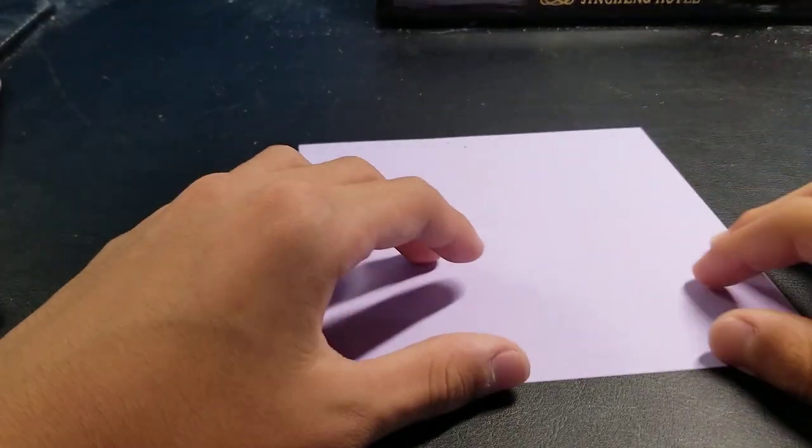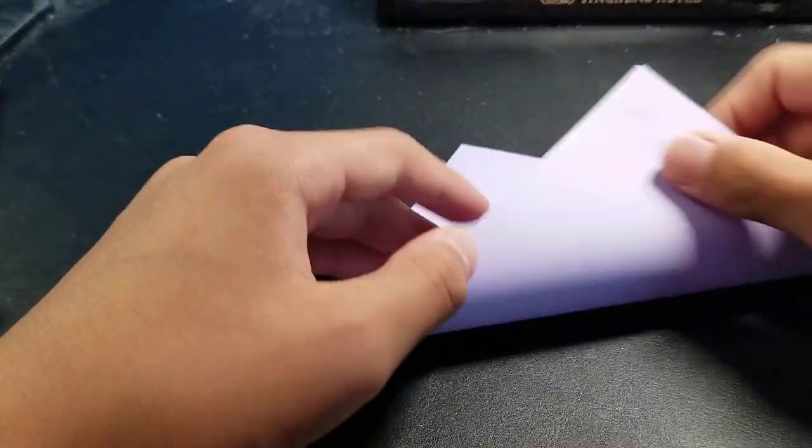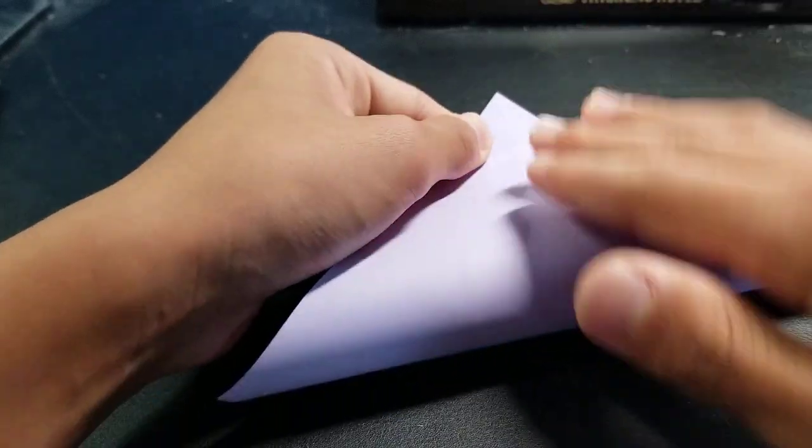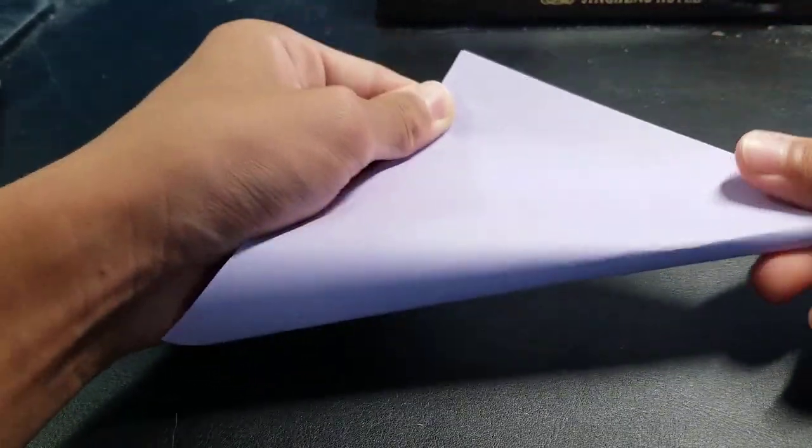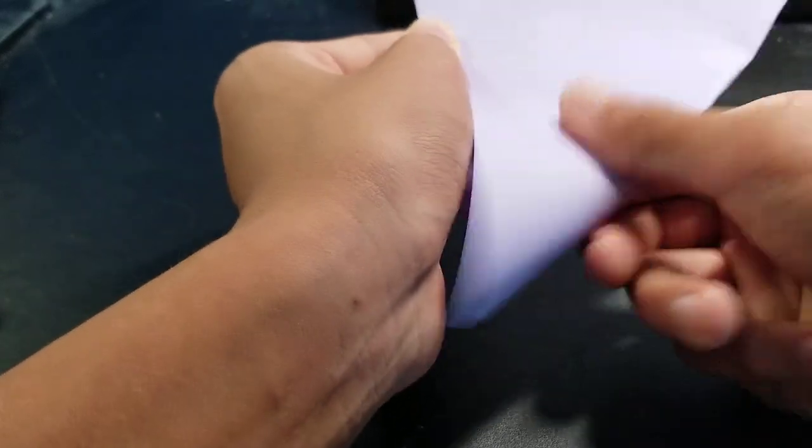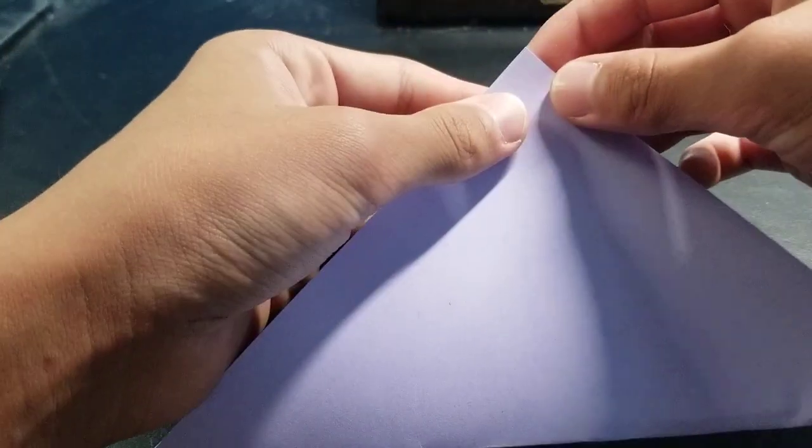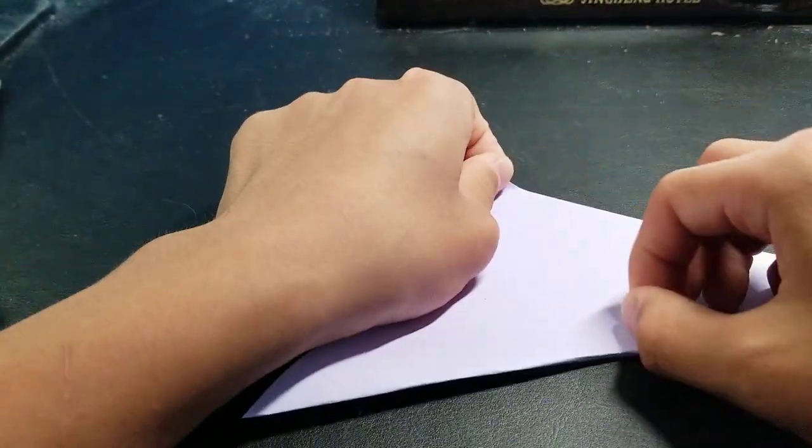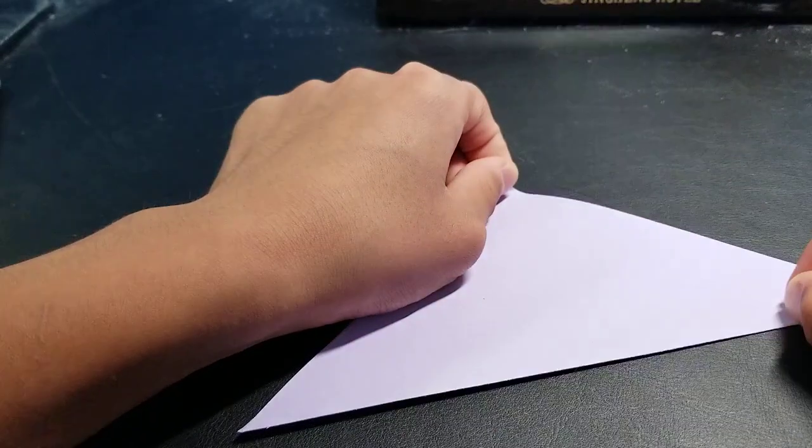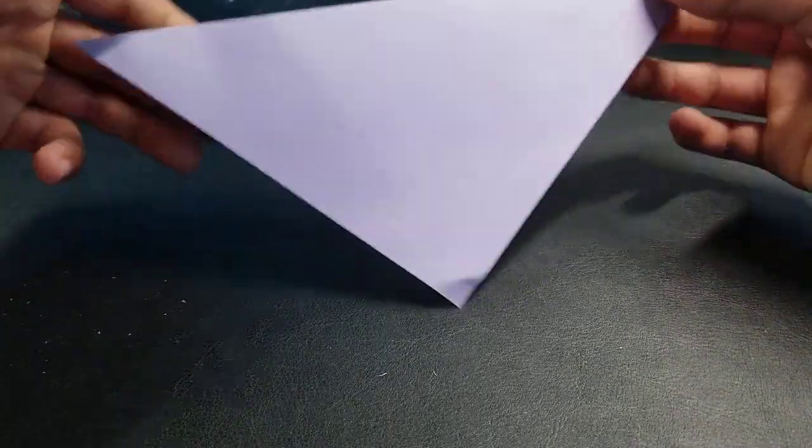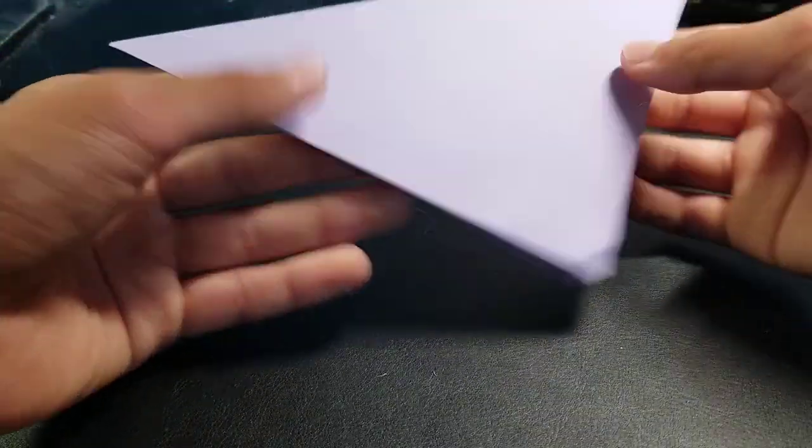You need a square sheet of paper and you want to fold it from corner to corner like that. And then turn it upside down and you want to fold this corner to this corner.